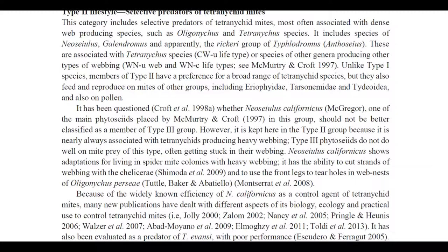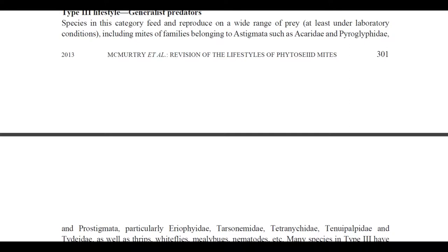Another very well-known predatory mite is Neoseiulus californicus, and this paragraph explains why it's somewhat tricky to classify some predatory mites. It has been questioned whether Neoseiulus californicus should be better classified as a Type 3 member. However, it is kept in Type 2 because it is nearly always associated with tetranychids producing heavy webbing, and Type 3 phytoseiids often get stuck in that webbing. Neoseiulus californicus shows adaptations for living in spider mite colonies, including the ability to cut webbing strands with its chelicerae and to use front legs to tear holes in webbed nests of Oligonychus persea.